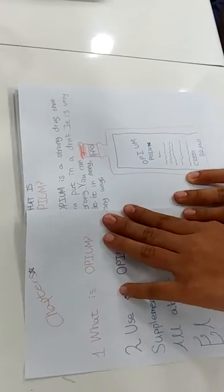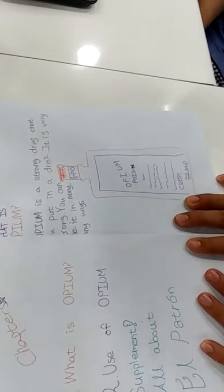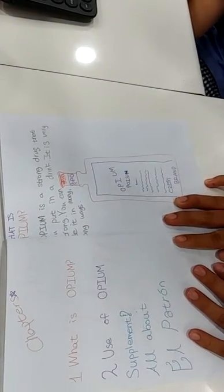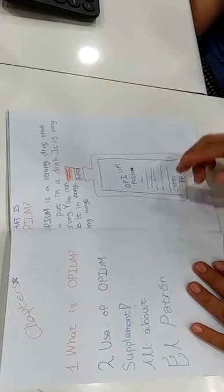What is Opium? Opium is a strong drug that you put in a drink. It is very strong. You can use it in many ways.